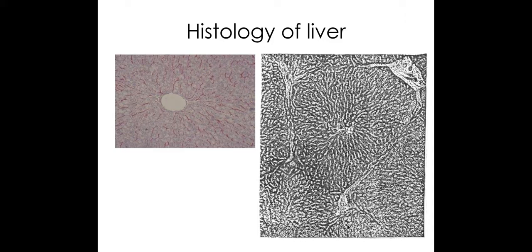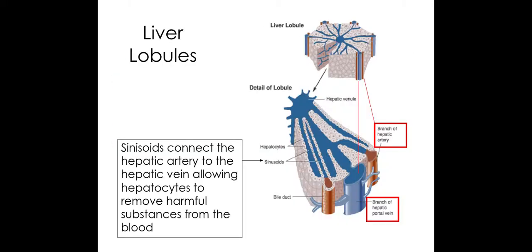In this image you can see the central vein in the centre of the lobule, and on the outside there are other blood supplies such as the hepatic artery and the hepatic portal vein. You need to be able to label these in an image like this. You can tell the difference between the hepatic portal vein and the hepatic artery due to the diameter of these blood vessels.